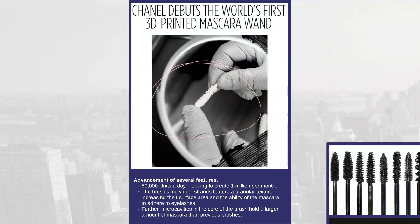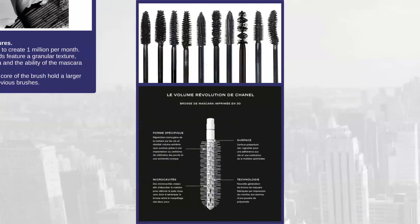Chanel is talking about 3D printing the brushes for mascara. When you think about the traditional process of how these brushes are made, you could potentially only make one style. They're talking about producing 50,000 units a day, and you can see from the image that they could make all the brushes differently. It doesn't matter in terms of scope, scale, and capabilities of what the technologies can do. They're actually producing brushes that are more capable than the traditional manufactured route.